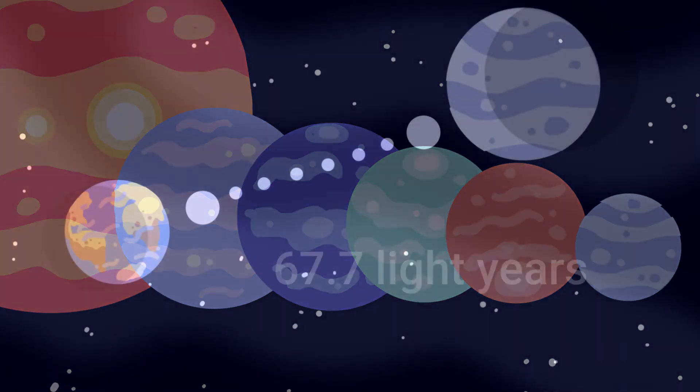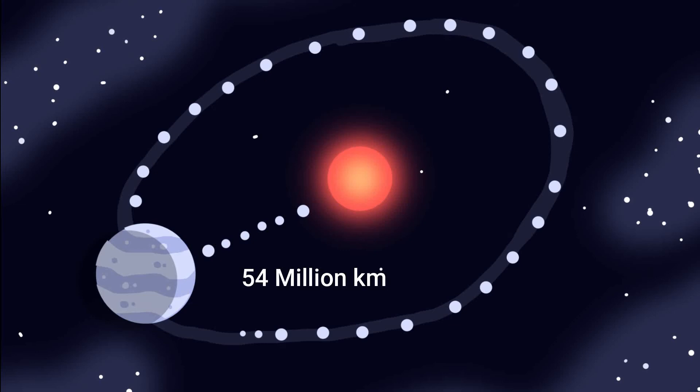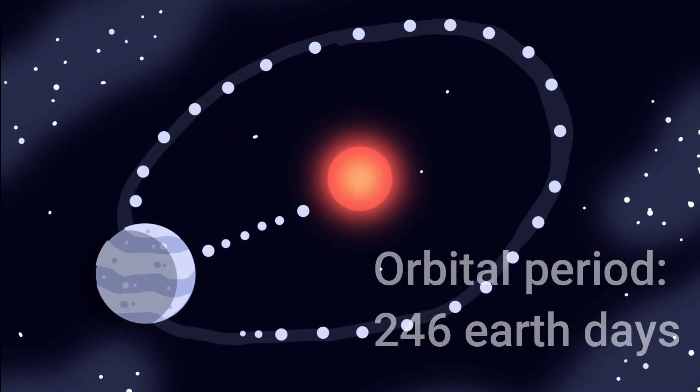It lies at a distance of 67.7 light years from us, at a distance of 54 million kilometers from its parent, with an orbital period of 246 days.